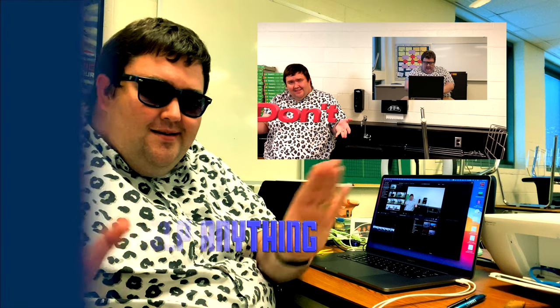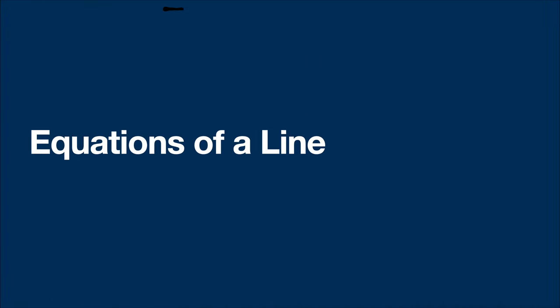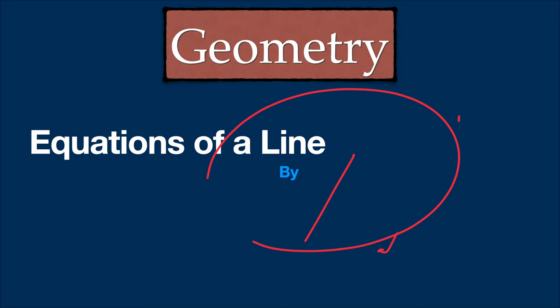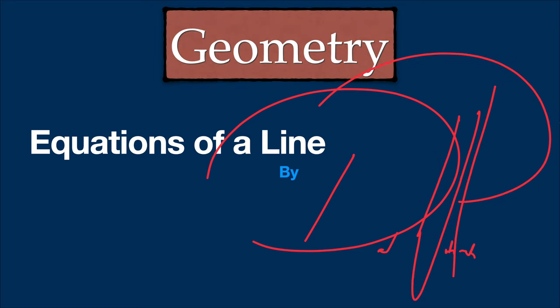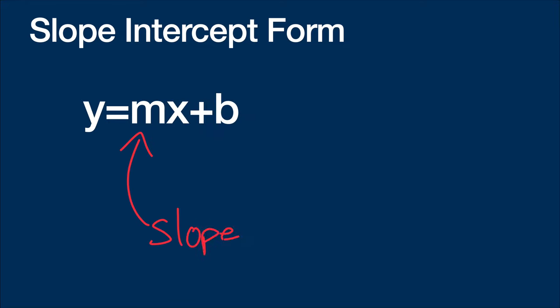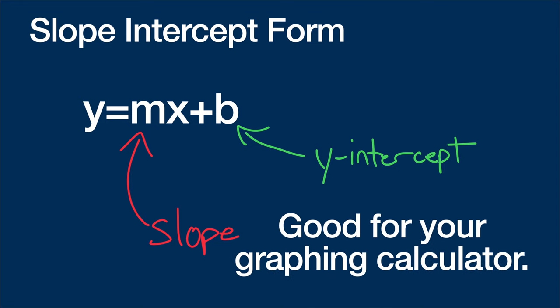This is geometry, so today we're going to be talking about the equations of a line. The first line that we're going to talk about is slope-intercept form. This is the one you probably already know. It's y equals mx plus b, where m is the slope and b is the y-intercept. This is good for putting in a graphing calculator if you want to graph by hand and you want to start at the y-intercept.